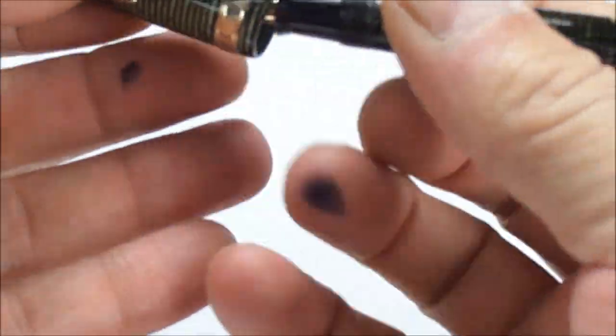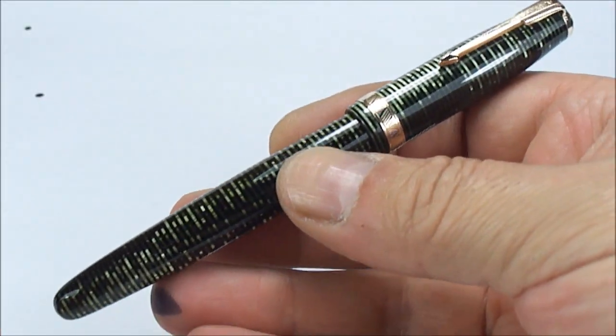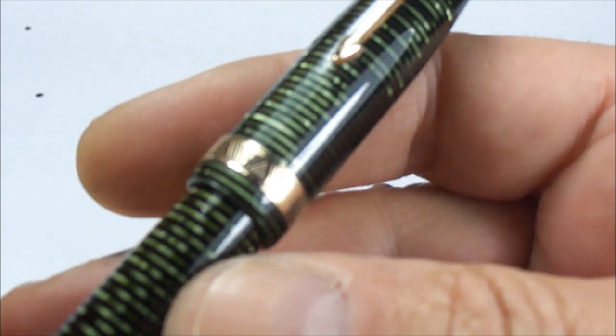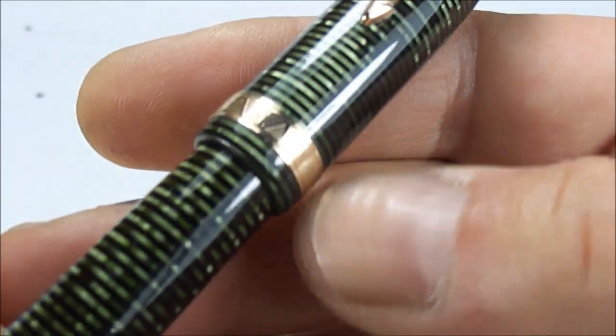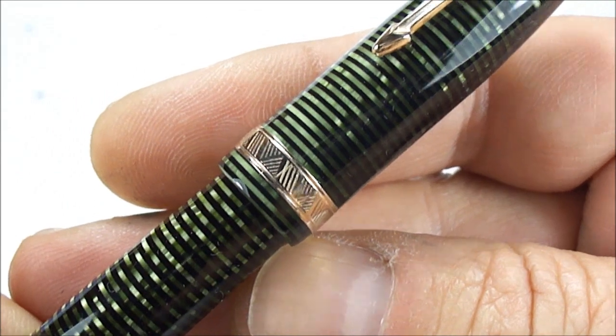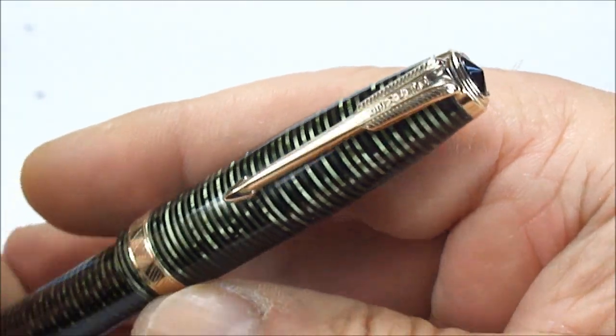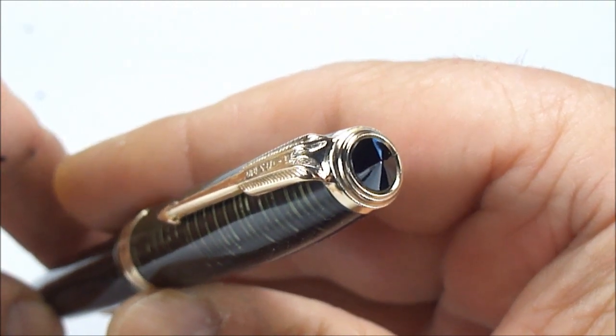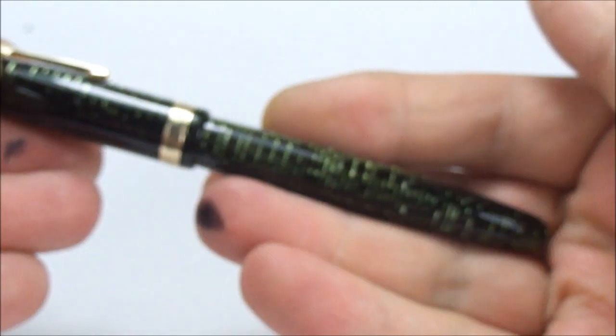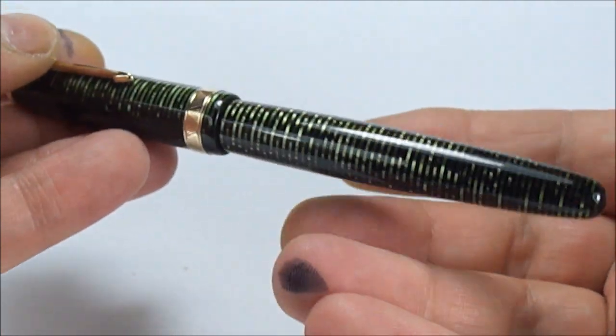So there's the writing sample there. So there we have it an absolutely gorgeous Parker Vacumatic Major with this lovely large cap ring to the bottom of the cap there. As we said earlier it's got this lovely split arrow clip with a stud to the end of the cap there. All in all a gorgeous gorgeous pen.